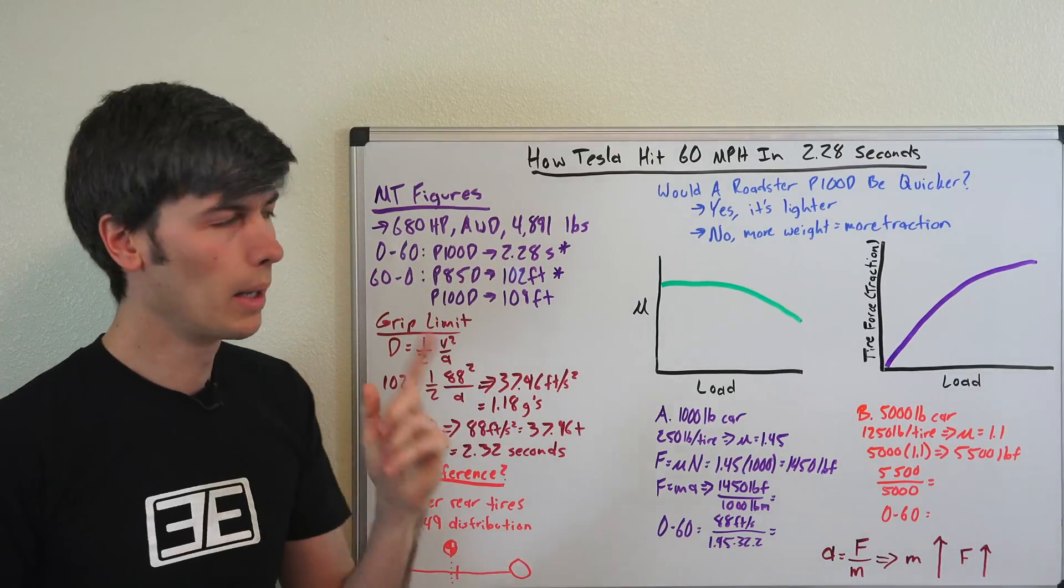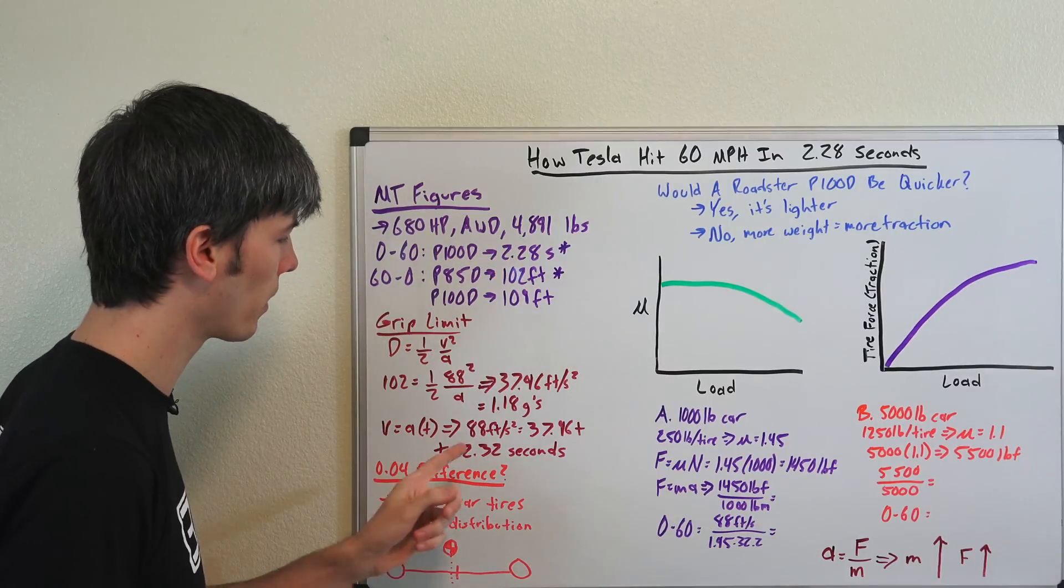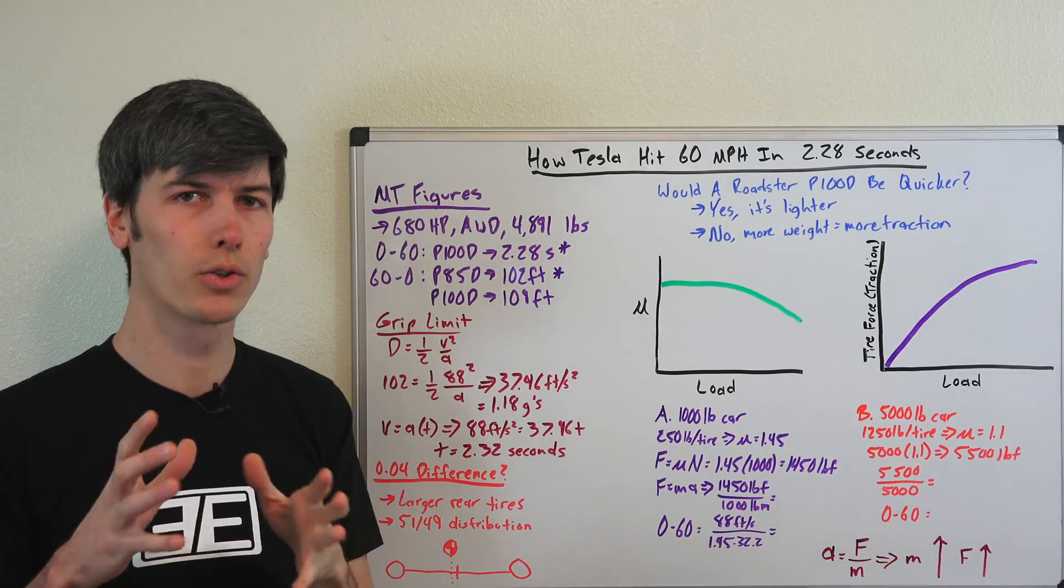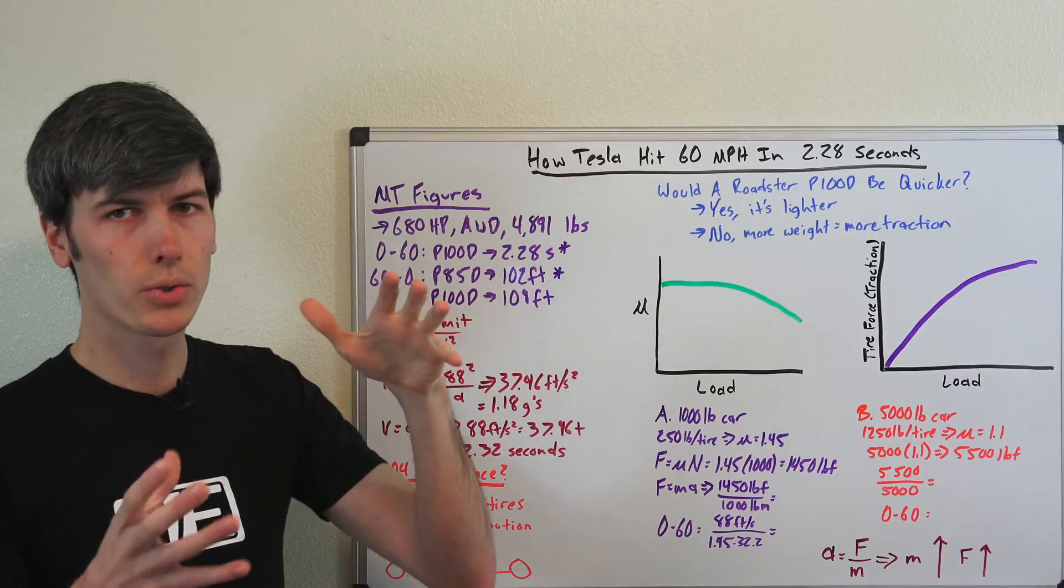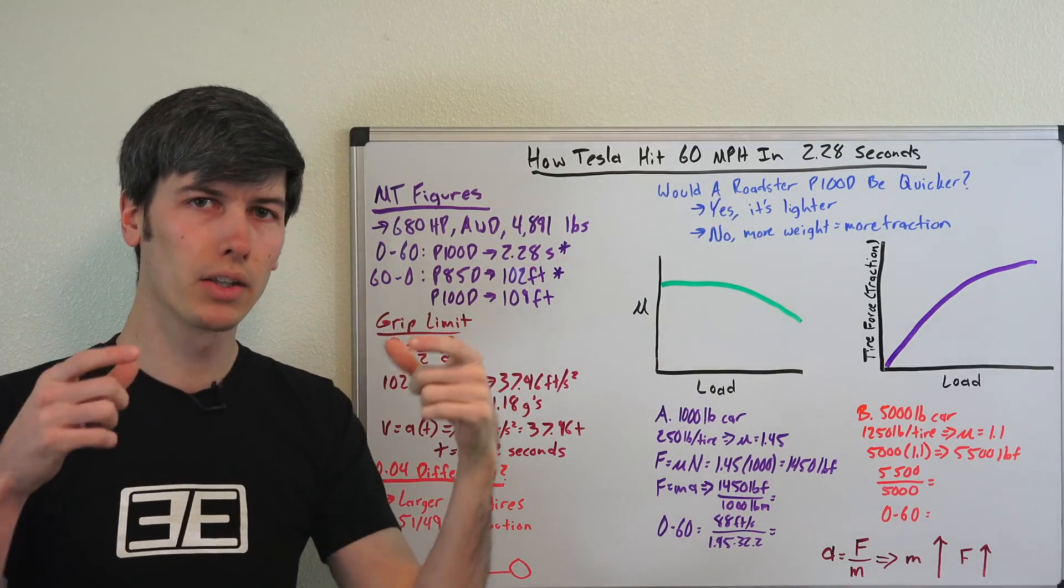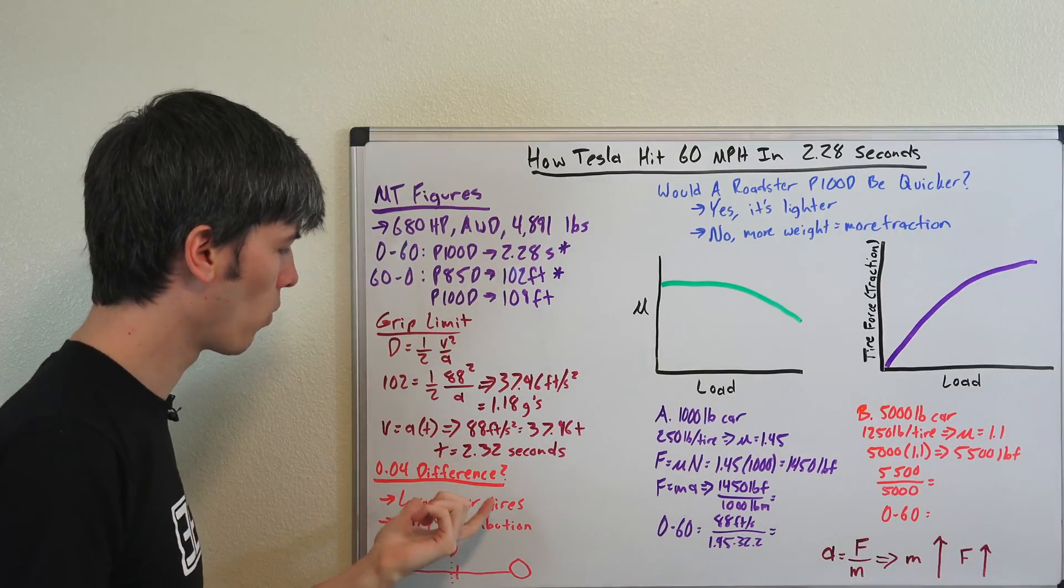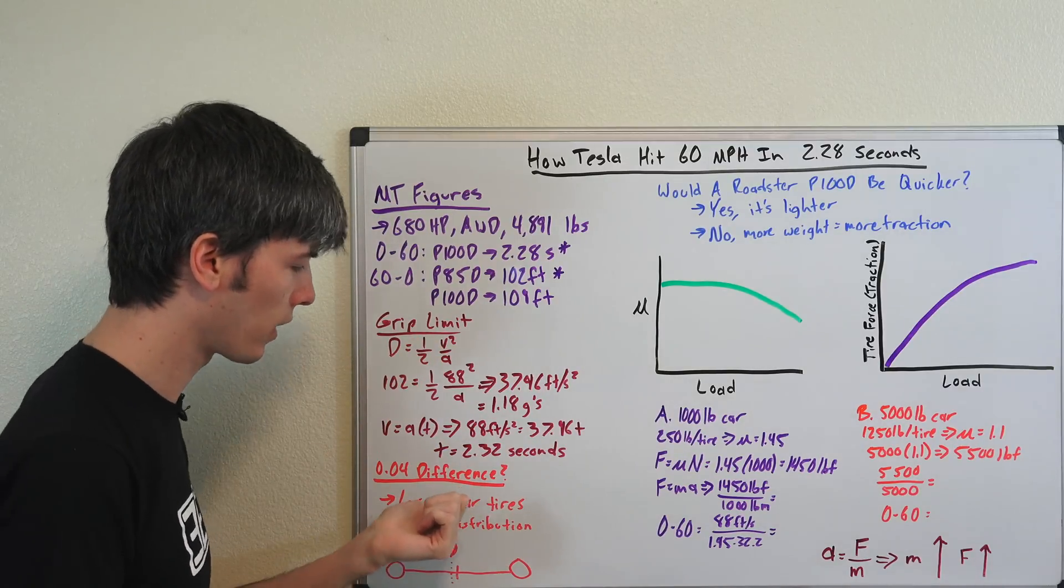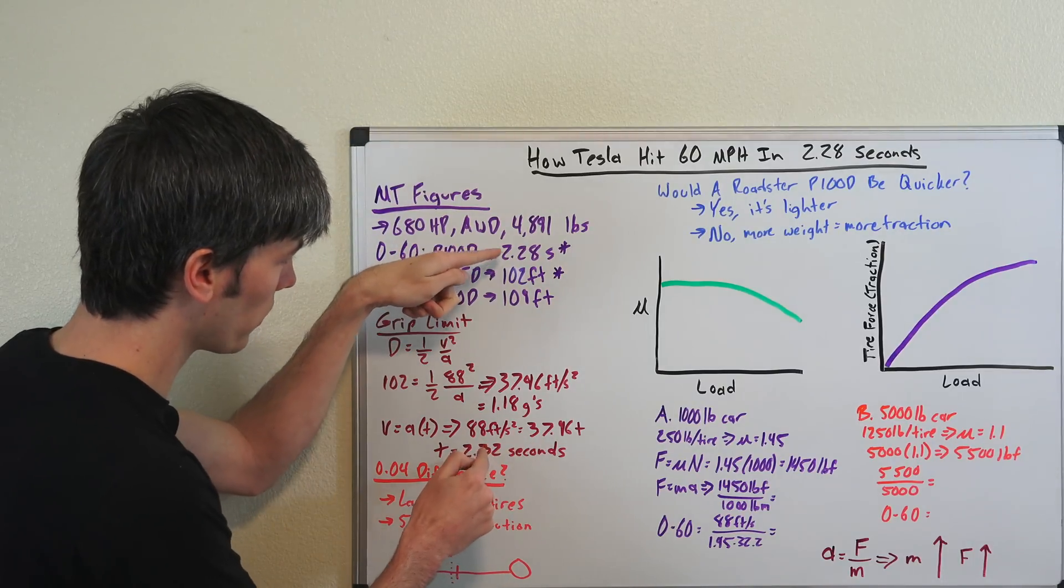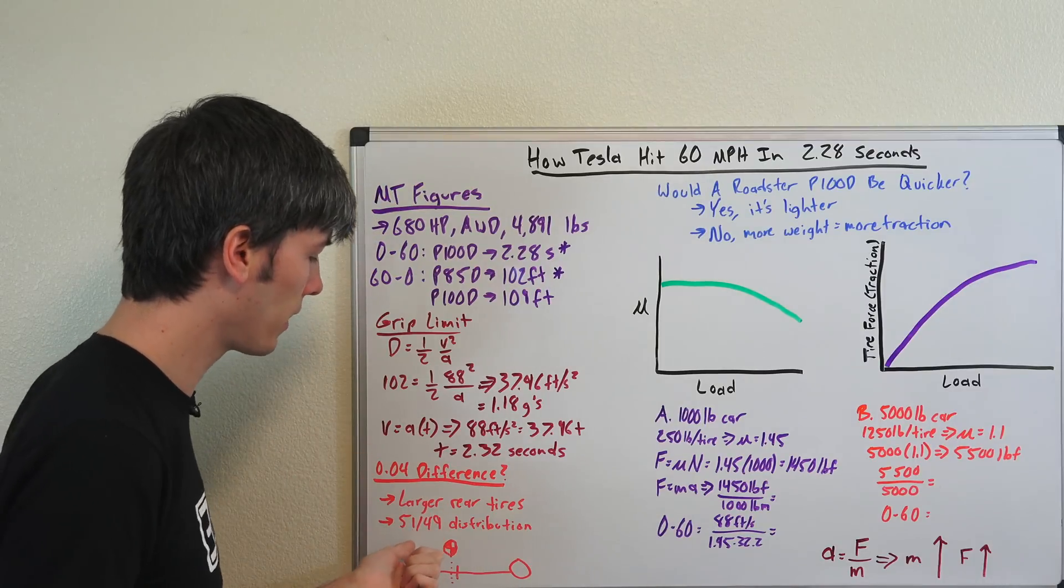Regardless, they are very close, but there are a couple things to keep in mind about why this number could theoretically be better than this number. First of all the Model S P100D has larger rear tires. So when you have load transfer to those rear tires they will have more grip versus when you're braking you have skinnier tires up front which are handling more load. So that's going to be one small difference. It's only 20 millimeters wider in the rear. But once again, this is a very small difference as well, 2.28 versus 2.32.